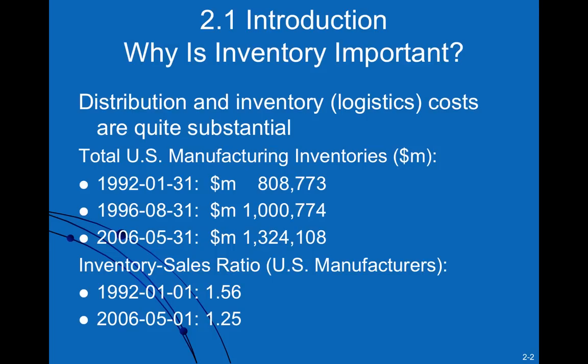If we look at this particular slide, we see that manufacturing inventories can be quite high. Looking at the change between 1992 and 2006, total US manufacturing inventories were 1.3 trillion dollars. In terms of inventory-to-sales ratios, it was 1.56 in 1992 and 1.25 in 2006 — so we've been able to bring down inventory levels relative to sales, however this issue is still a major concern.